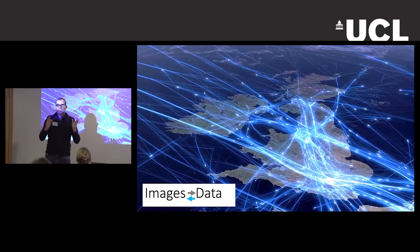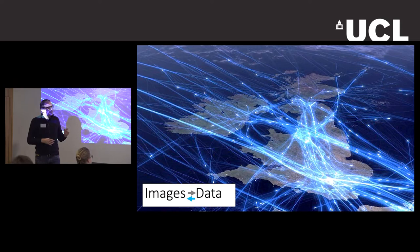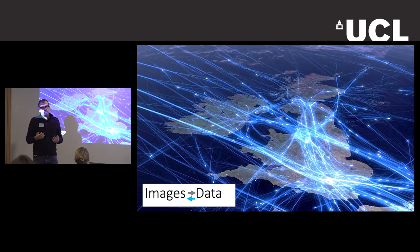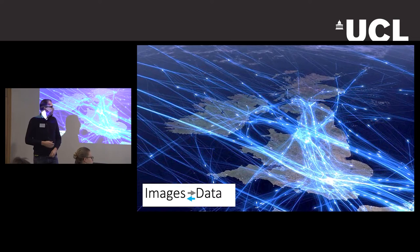We live in a very image-rich world where images become data and data become images. You can get a sense just by plotting the flights over the British Isles that there is likely to be a city here — you can get information from images that become data, and equally you can visualize data with images. I'd like to first give you a bit of lingo and background, and then we will dig deeper into what we do and how we've applied these concepts to our work.